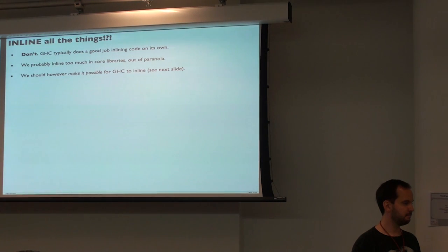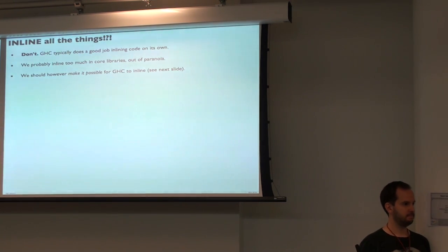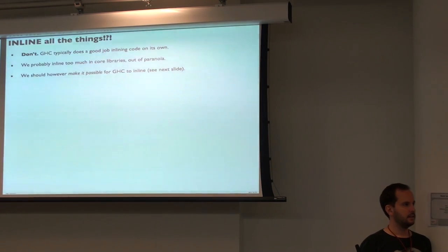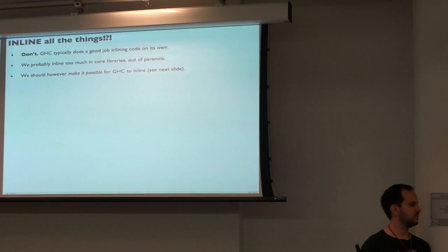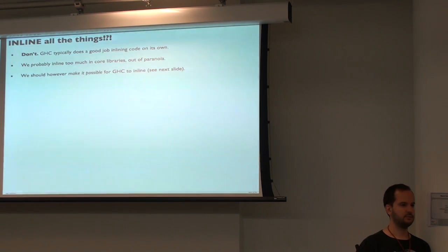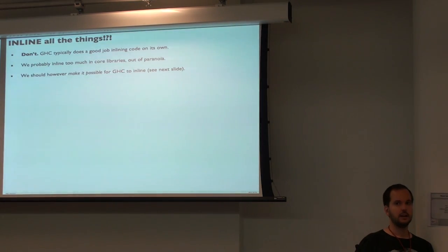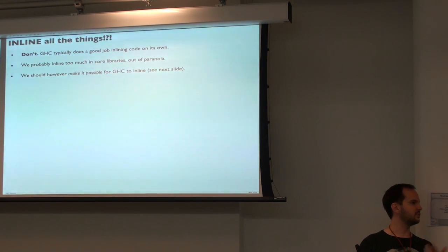And here we come back to the question about existing data types. We live in an ecosystem with lots of default data types that are not strict in their values — like Maybe, Either, tuples. You have to be a little more careful. You have to get used to spotting these. Because if you look at Stack Overflow when people have problems with performance, often they did the computation very nicely, put some bang patterns, and then put the result in a pair or a Just or Left/Right constructor which was lazy — so they didn't force in the end and all their bang patterns were for nothing.